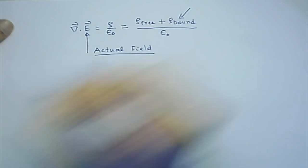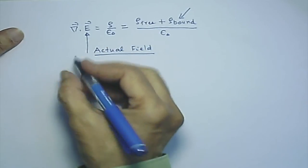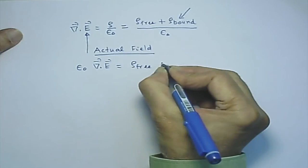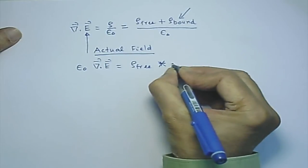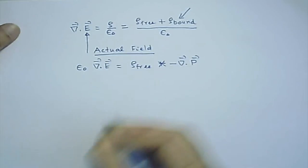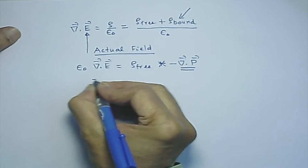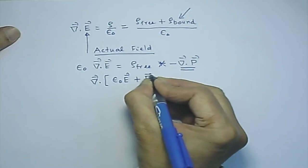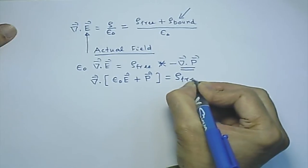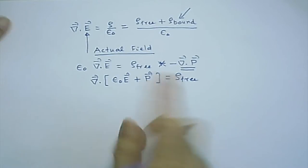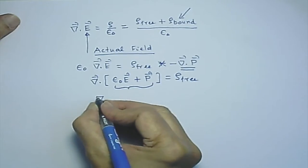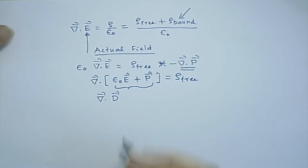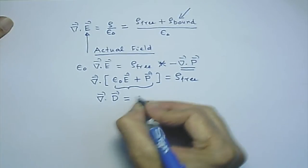If rho has two parts — the free part and rho_bound divided by epsilon_0 — this part came from the polarization component. I can rewrite: epsilon_0 del·E = rho_free + rho_bound, and since rho_bound = −del·P, I take this term to the left and find that del·(epsilon_0 E + P) = rho_free. Notice there is no divided by epsilon_0 here. This defines the D vector, originally called the displacement vector.